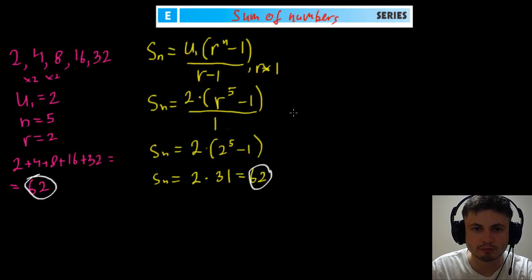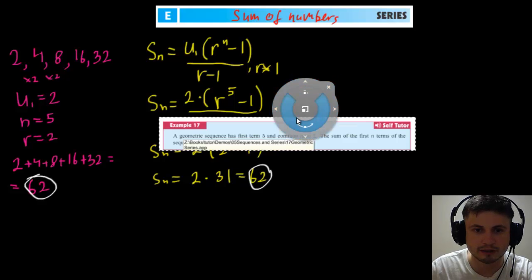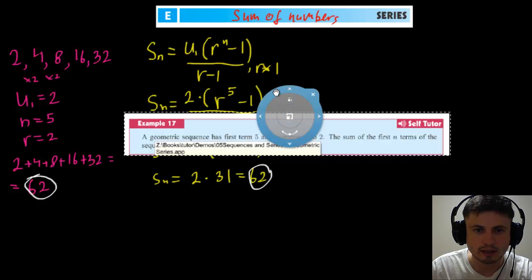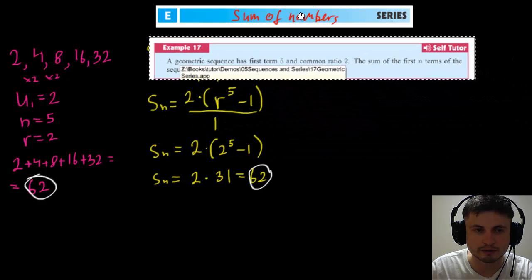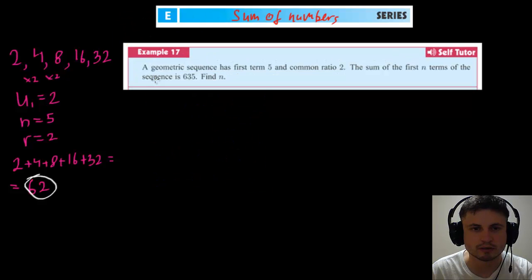All right, just to practice, let's try one of the problems from the book. This is actually example 17 on page 144. So this is the question. A geometric sequence has a first term five and a common ratio two. The sum of the first n terms of the sequence is 635, find n. So it's a word problem, but it's a pretty simple word problem. So let's start by writing down what we know and then what we have to find.